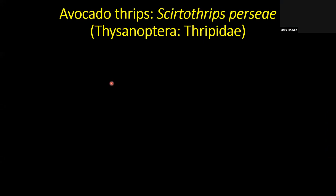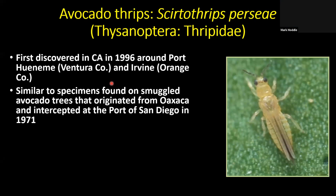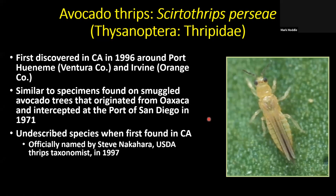Let's get into avocado thrips, Scirtothrips perseae. It's in the family Thripidae and is a terebranchian thrips. First discovered in California in 1996 around Port Hueneme in Ventura County and Irvine in Orange County. It was very similar to specimens found on smuggled avocado trees from Oaxaca in southern Mexico, intercepted at the Port of San Diego in 1971. It was named in 1997 as the avocado thrips, Scirtothrips perseae.